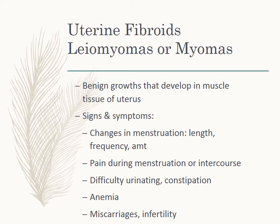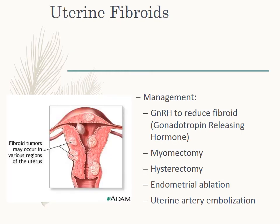Uterine fibroids, or myomas, are benign growths that develop in the muscle tissue of the uterus. They cause changes in menstruation — length, frequency, and amount — pain during menstruation or intercourse, difficulty urinating, frequent constipation, anemia, miscarriages, and infertility. Fibroids are benign, estrogen-dependent uterine tumors diagnosed through pelvic exam, ultrasound, hysteroscopy, or laparoscopy. Management includes GnRH — gonadotropin-releasing hormone — a myomectomy to preserve the uterus for future pregnancy, or a hysterectomy, endometrial ablation, or uterine artery embolization. Low-dose oral contraceptives can also help control heavy bleeding and painful periods.